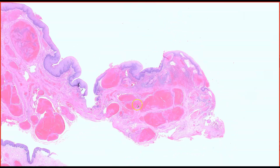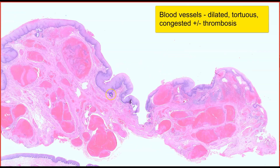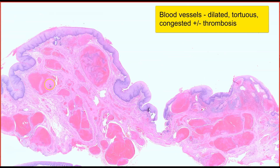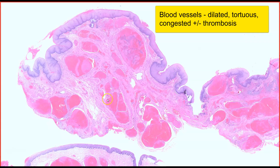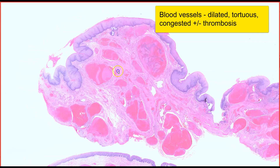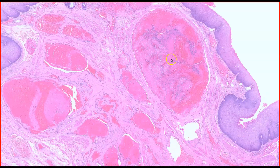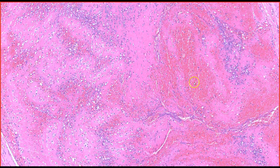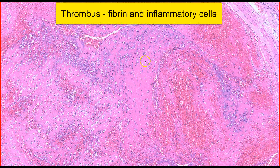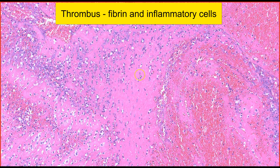Beneath the epithelium, we can see these very prominent, congested, dilated, and tortuous blood vessels. Within some of the vessels — for example, this one — not only do we have red blood cells, we also have this pink fibrin deposition as well as inflammatory cells. This is the process of thrombosis.